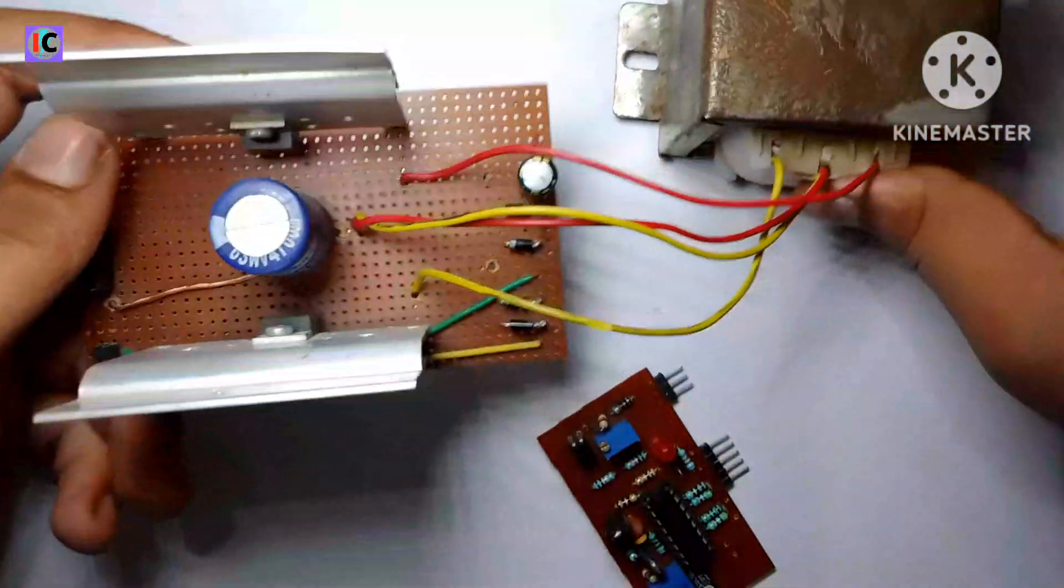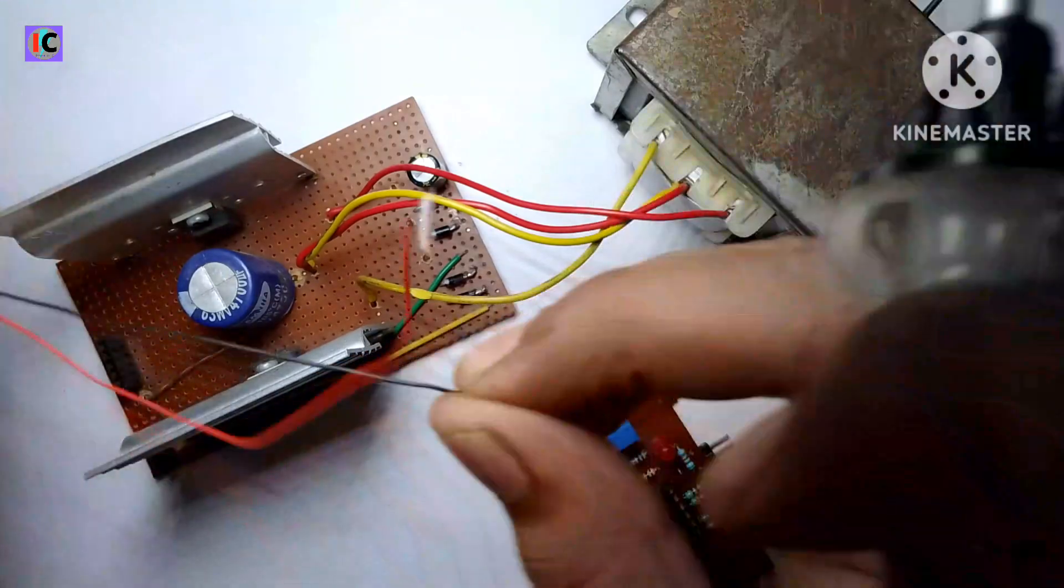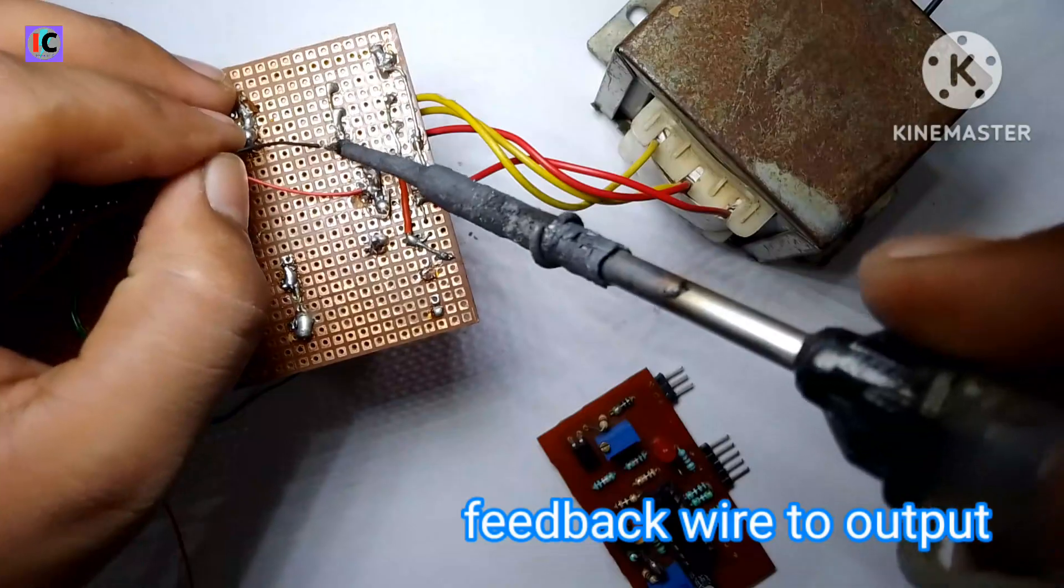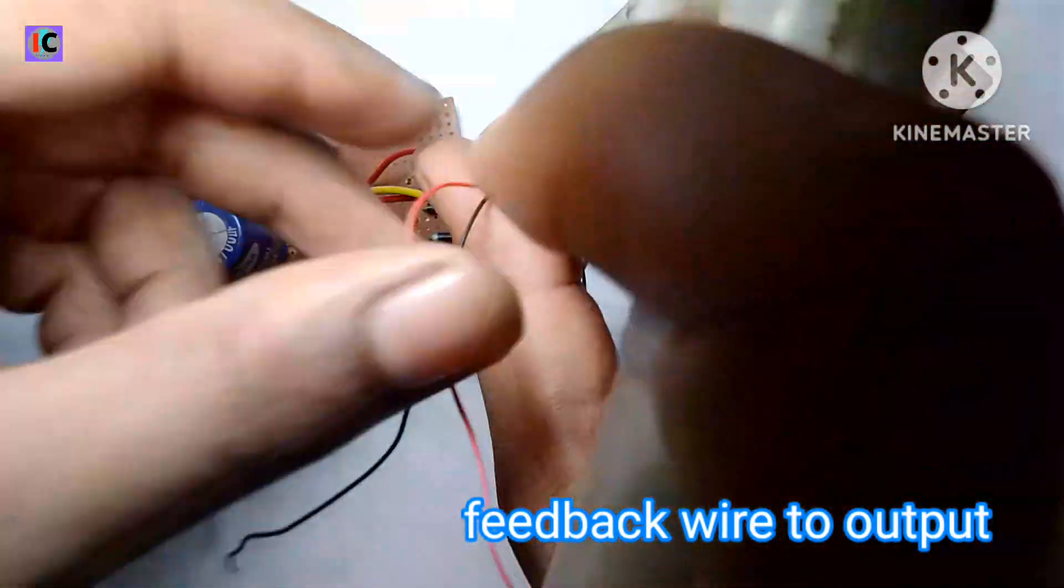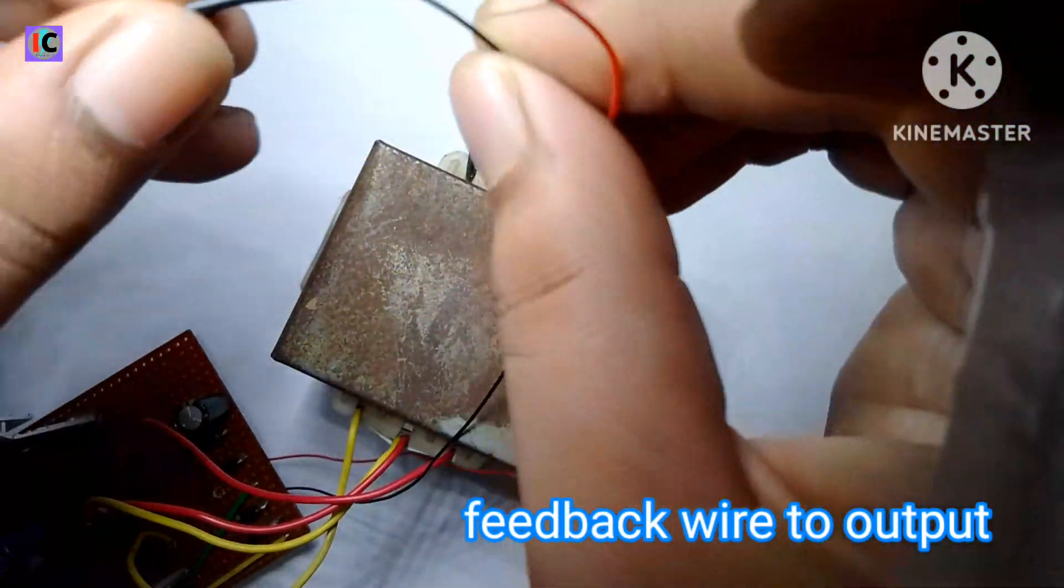After this, we have to connect the feedback wire, which is used to adjust the output voltage of this inverter. The wire goes to the output of the transformer, which is a 220 volt AC wire.